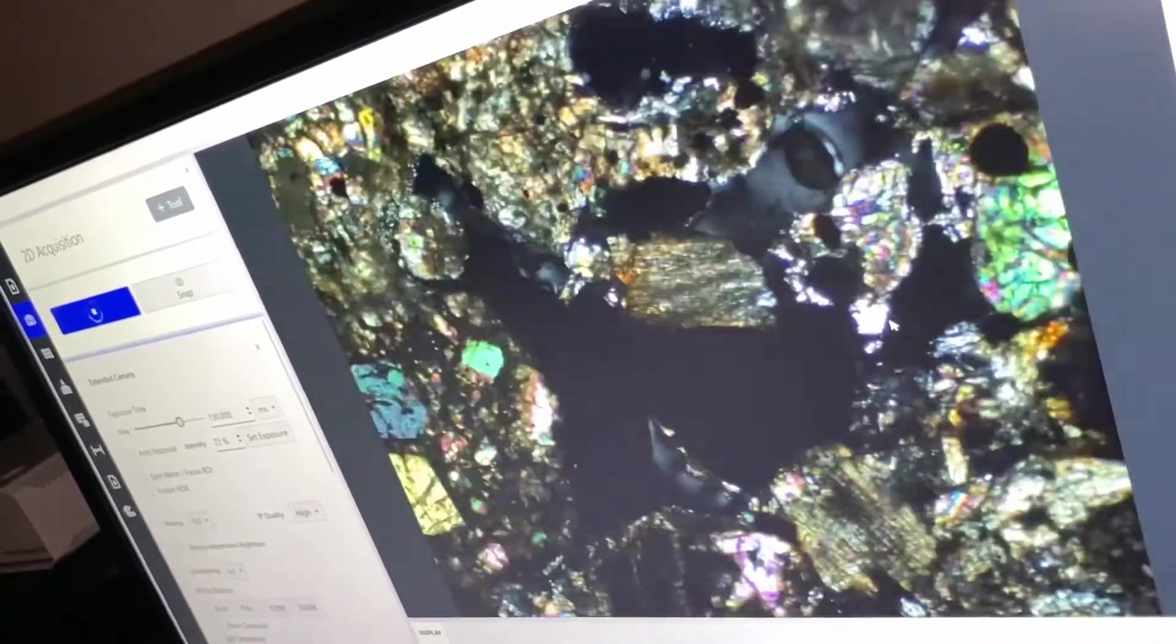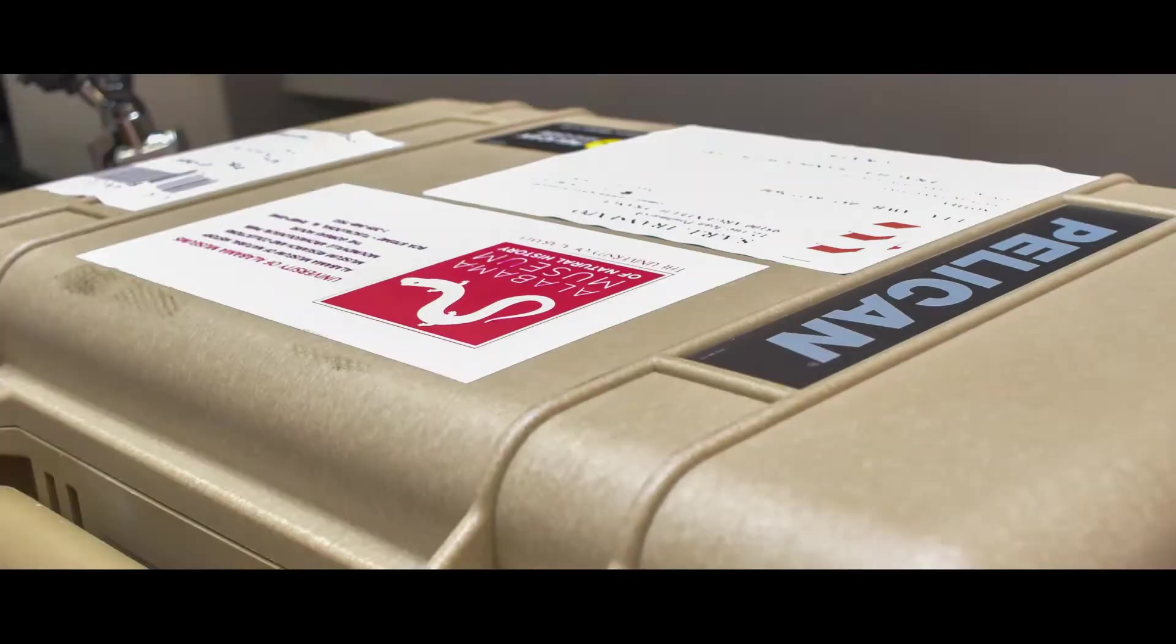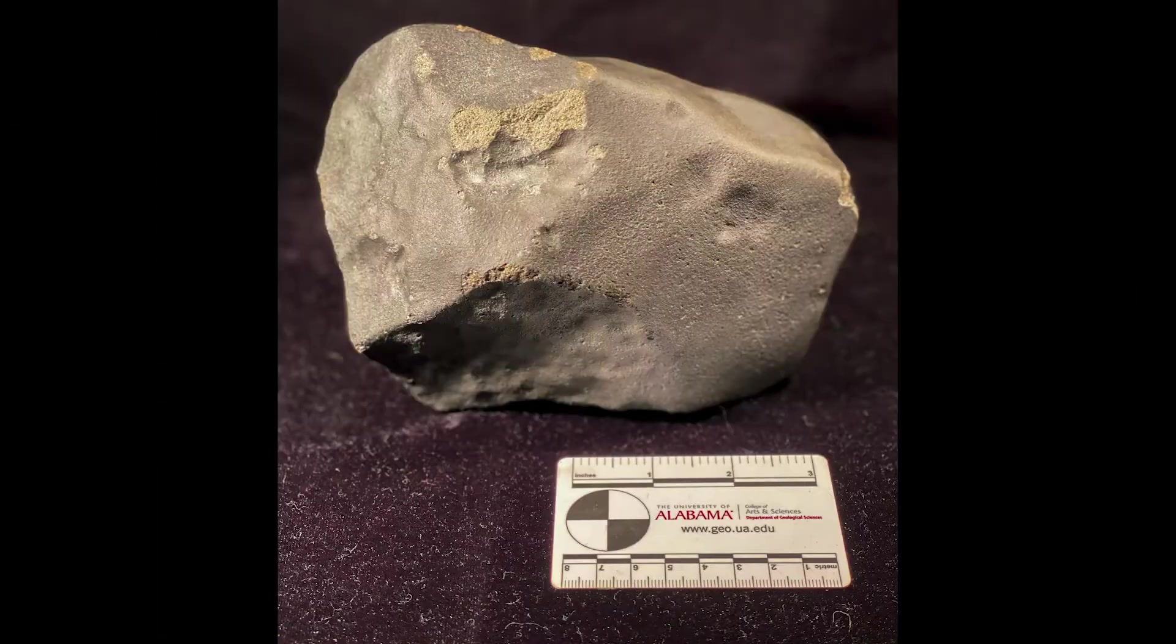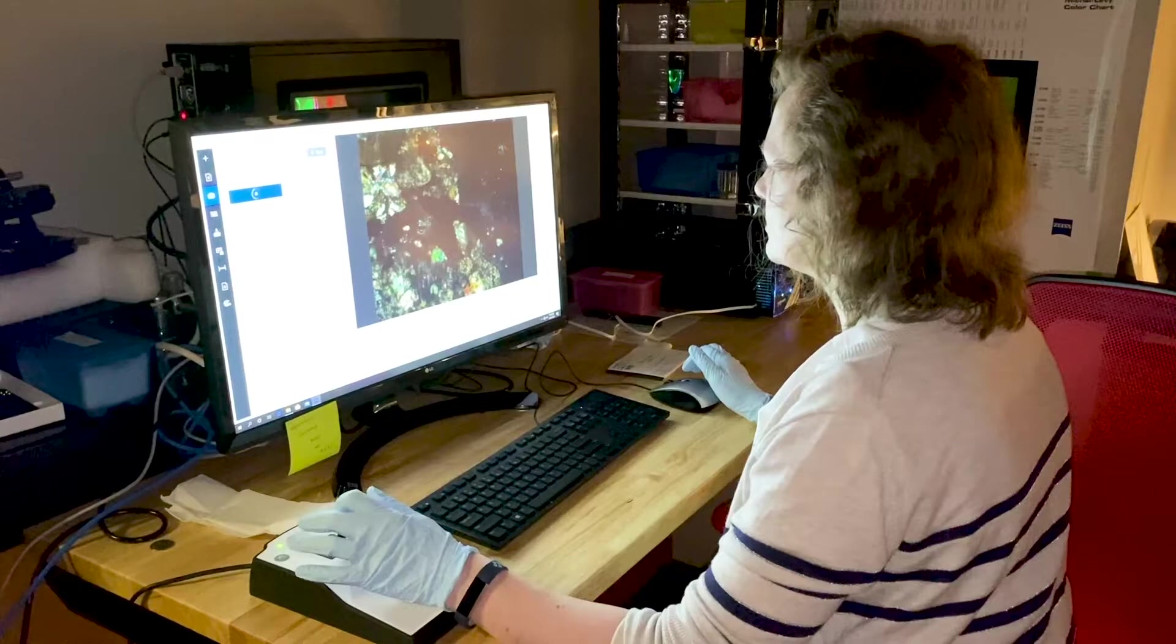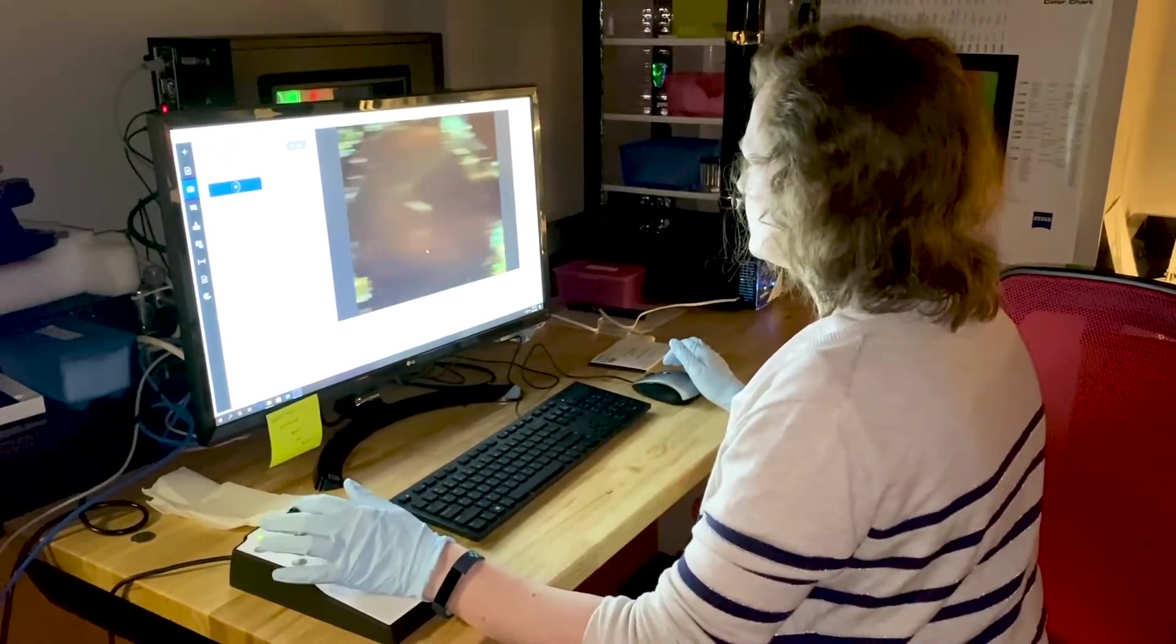A couple of years ago when I first started here at UA I went and spoke to the folks at the museum to say hi, I'm here, I'm actually a meteorite expert, I'd love to get to know some of the samples and talk to you guys. Since then we've been in discussions about what we can do with the samples and how we can work with the other meteorites that they have in their collection. They very kindly loaned me the sample to have a look at it and really start the process of doing some analysis. I'm hoping this is the start of further techniques that I'm able to use with the sample.